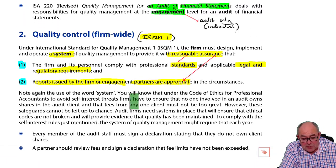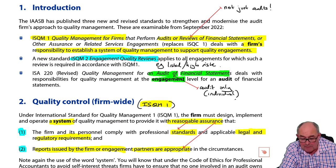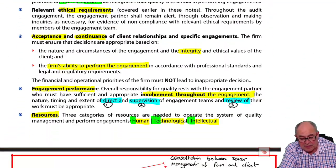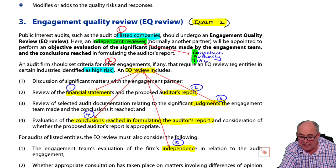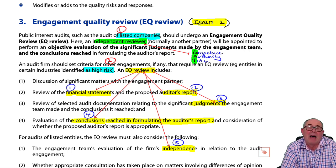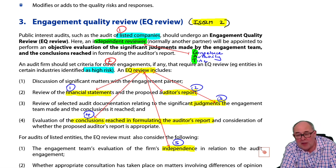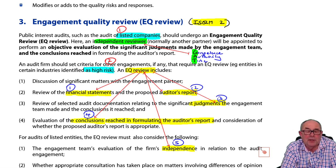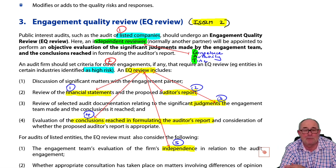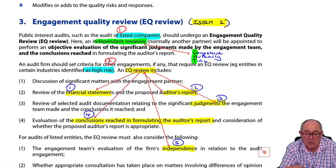ISQM 2 deals with a specific stage in the quality management process: the engagement quality review, which is required for listed and other high-risk clients. Historically known as the hot review, the concept is that a second partner will come in, review everything, and decide whether everything necessary has been done and whether they would reach the same conclusion — before the audit opinion is signed. For very high-risk clients, it's not uncommon to have two hot reviews.